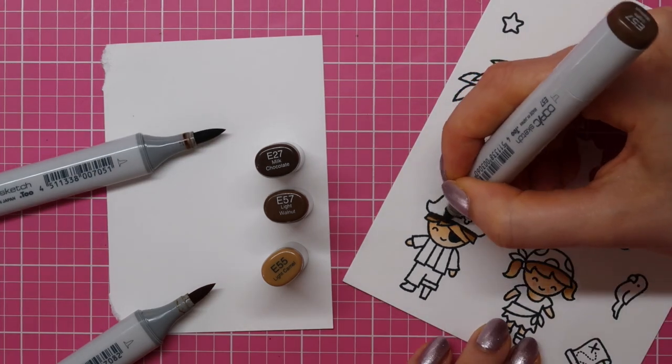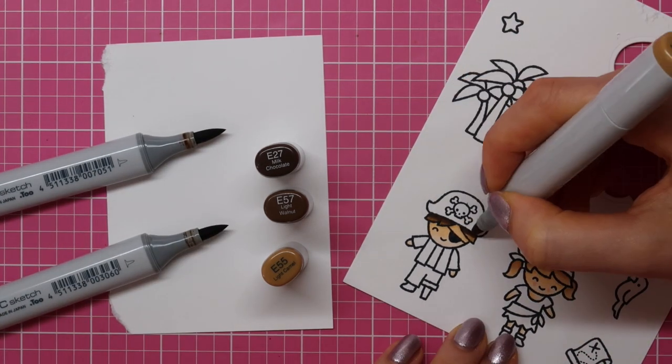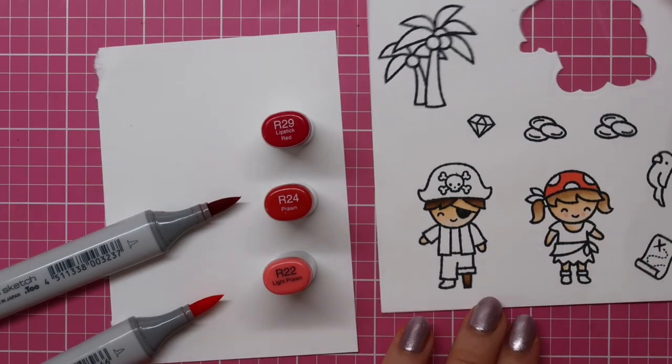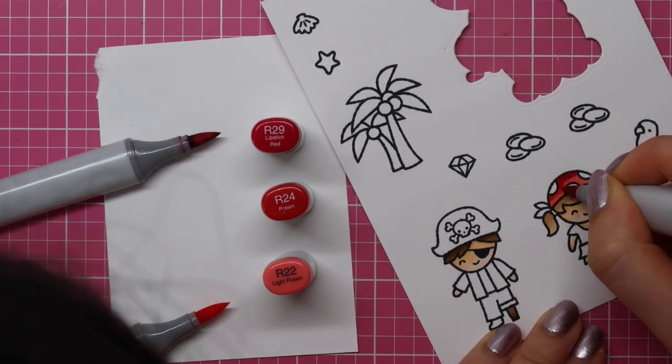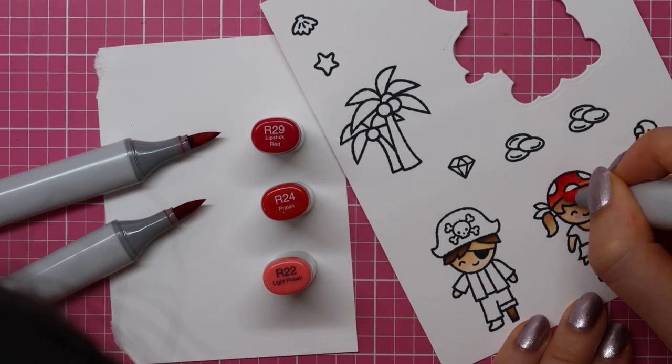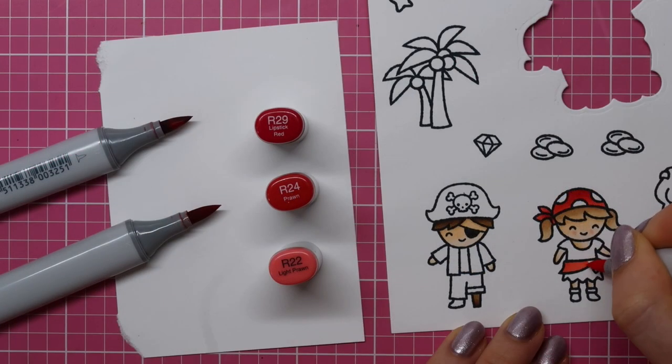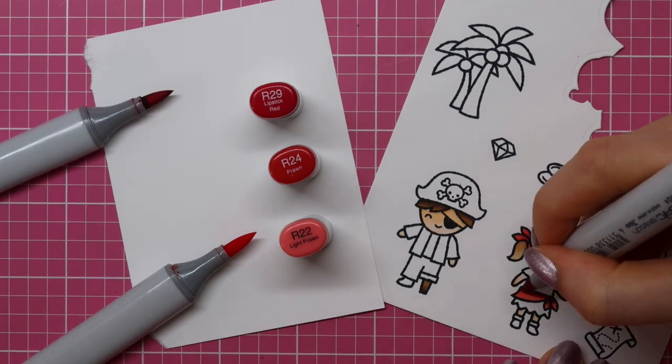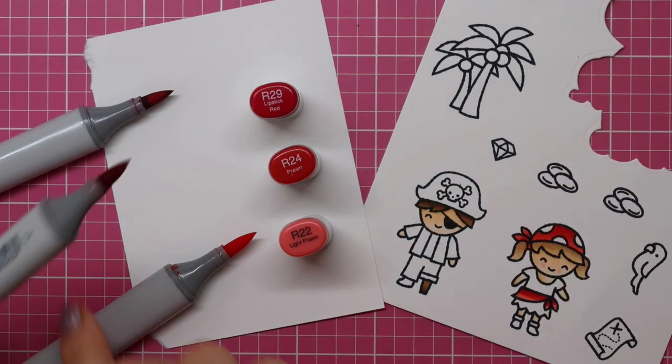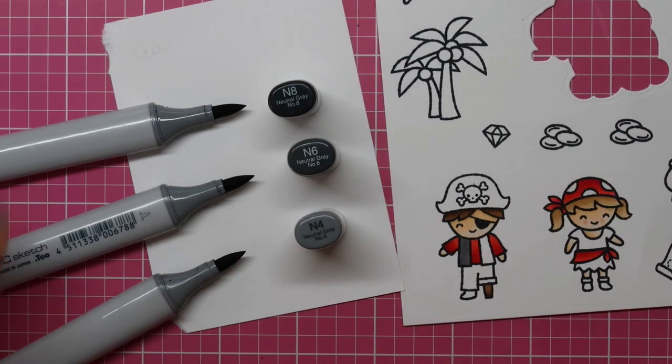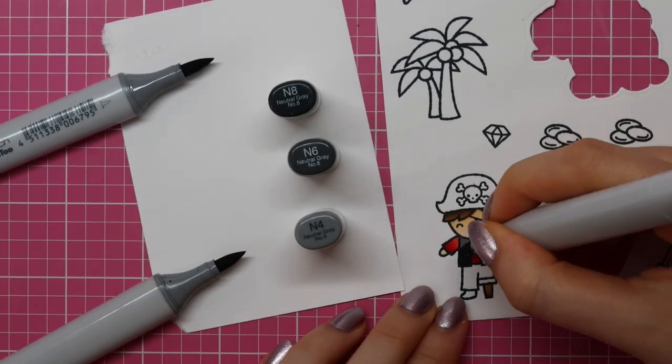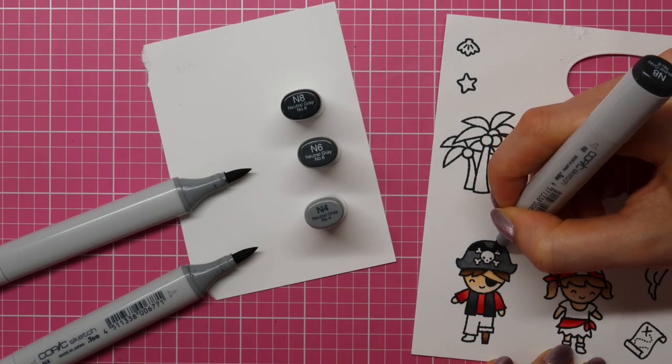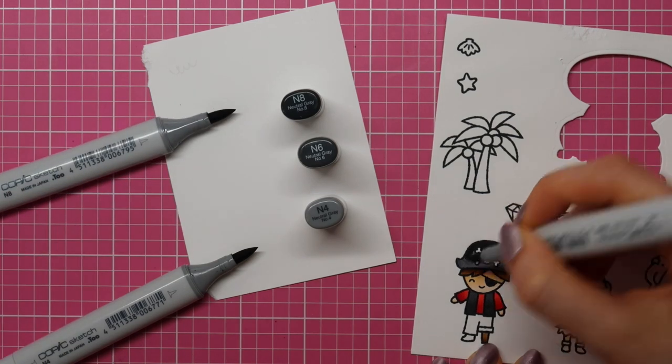Now that I colored the little girl's hair, it's time for the little boy. I am using E27, E57 and E55. I am actually coloring all of these images the exact same like I did in a tutorial a couple of weeks ago. I will link to that video tutorial in my video description so you can see how I colored all of the other images.